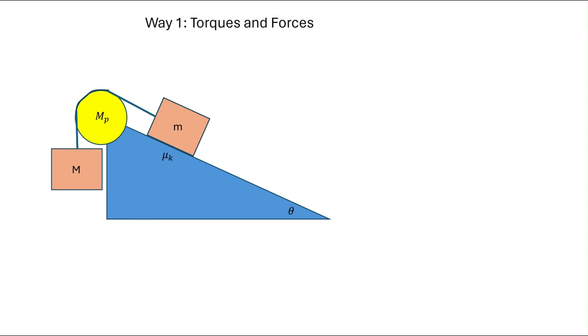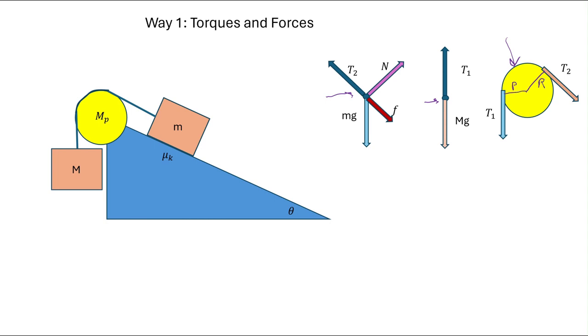The first way to do it is with torques and forces. This is probably the way that you're most familiar with. The strategy here is that you make free body and rigid body diagrams. So you make one for each object: we've got a free body for the block on the incline, a free body for the hanging block, and a rigid body diagram for the pulley. Here you have to draw where the forces act, not just what the forces are.